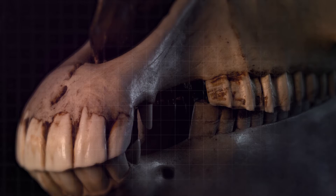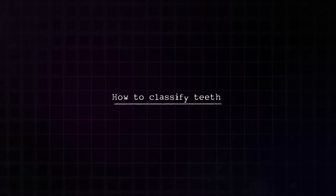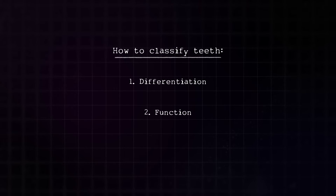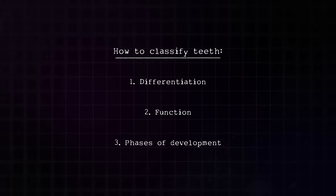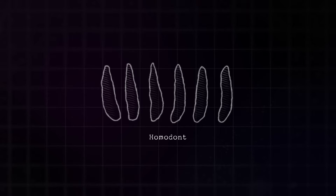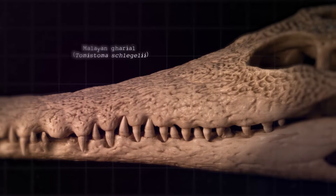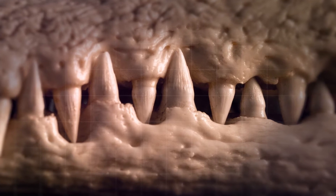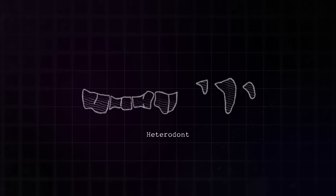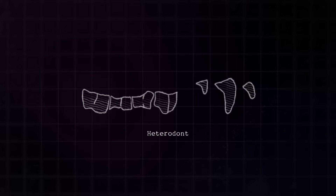To understand the specialization of an animal's dentition, we need to know how to classify teeth. This can be done by looking at the morphology of the different teeth — whether they are differentiated or not — their various functions, and the phases of development. If the teeth are not differentiated and no teeth are specialized, we call that animal a homodont. This Malayan gharial is an example: all teeth are the same. When the dentition is differentiated, we call that animal a heterodont. This animal features teeth that can fulfill different functions such as cutting, seizing, gnawing, tearing, chewing, and grinding. An example is this lion.